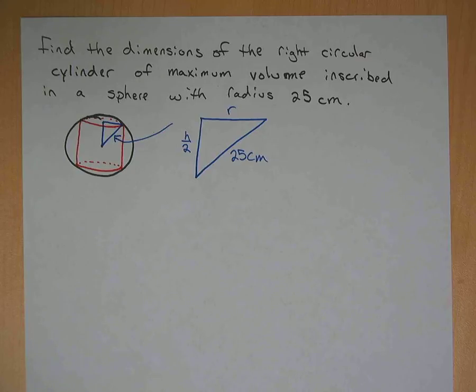Okay, we're going to find the dimensions of a right circular cylinder of maximum volume that's inscribed in a sphere with a radius 25.